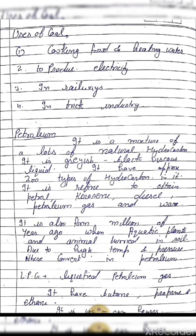Same as coal, due to high temperature and pressure, these aquatic organisms converted into petroleum. There are many places in our country where we can obtain petroleum, like Assam, Digboi, Madhya Pradesh, Bombay High, etc., and there are so many refineries also. Petrol and diesel are used for running vehicles; kerosene is used in houses and industries as a fuel; wax is used to make candles.